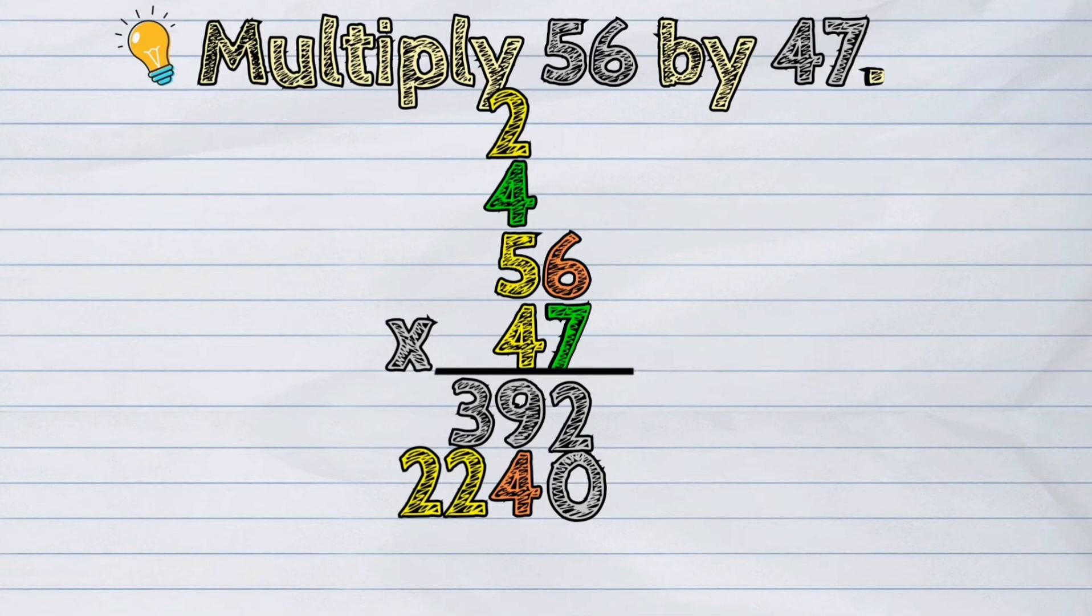The last process that we are going to do now is to add their products. 392 plus 2,240. Starting from the ones column, 2 ones plus 0 is 2 ones. Then, 9 tens plus 4 tens is 13 tens. Regroup this number by putting 3 in the tens place and carrying 1 in the hundreds place.